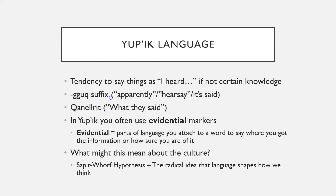We call that in linguistics an evidential marker — and if you want to seem really cool at a party, just start throwing around words like 'evidential marker' and 'polysynthetic.' An evidential marker is when you have built into a language parts you can attach to a word that indicate where you got the information from, or how sure you are of it. That's sometimes a hard concept for English speakers to grasp, because that's not really how English works. In English, you have to say a whole sentence — like 'I heard that Joe went to the store' — rather than having a small sound attached to the word 'went' that signals you heard it from somebody else.